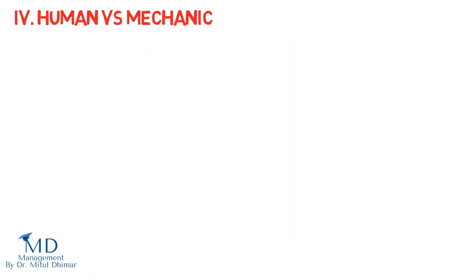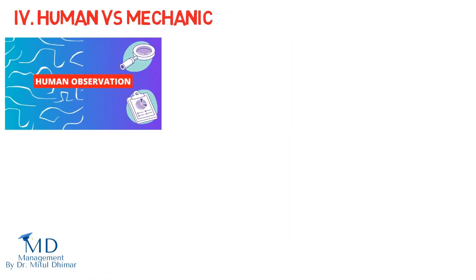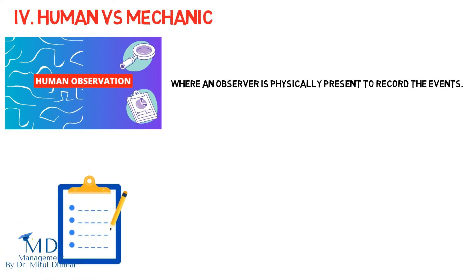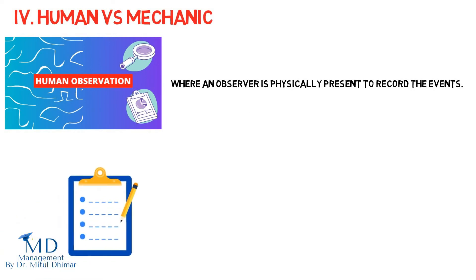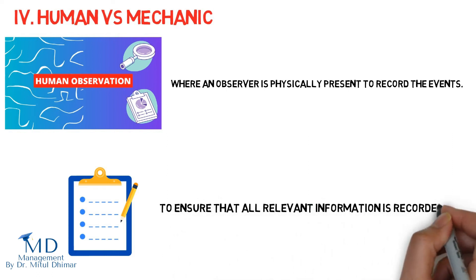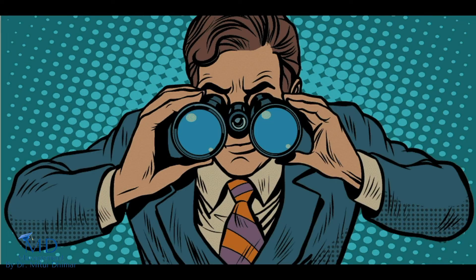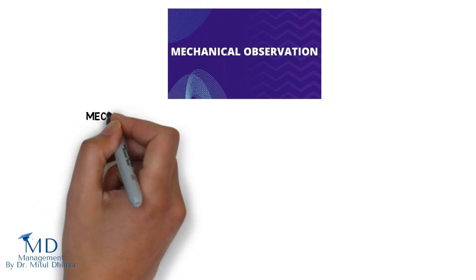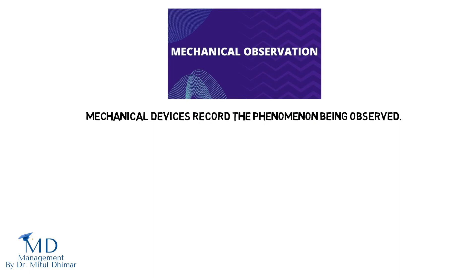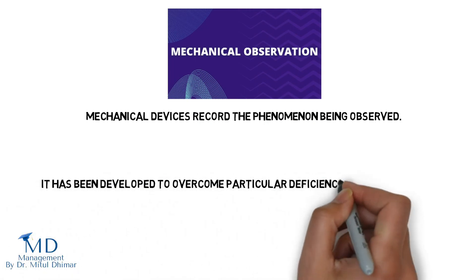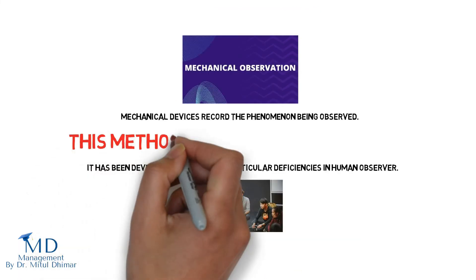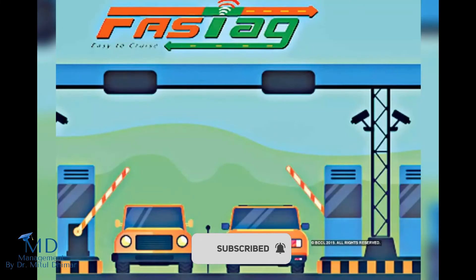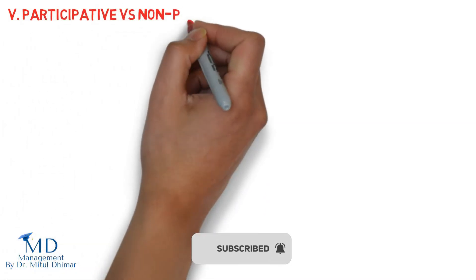Fourth: human versus mechanical. Human observation is similar to direct observation where an observer is physically present to record events. An observation form is often used to keep observations consistent and ensure all relevant information is recorded — for example, staff observing a queue at a billing counter to study impulsive buying. In mechanical observation, mechanical devices record the phenomenon being observed. This method is free from human bias — for example, counting the number of cars at a toll plaza through a FASTag scanner.